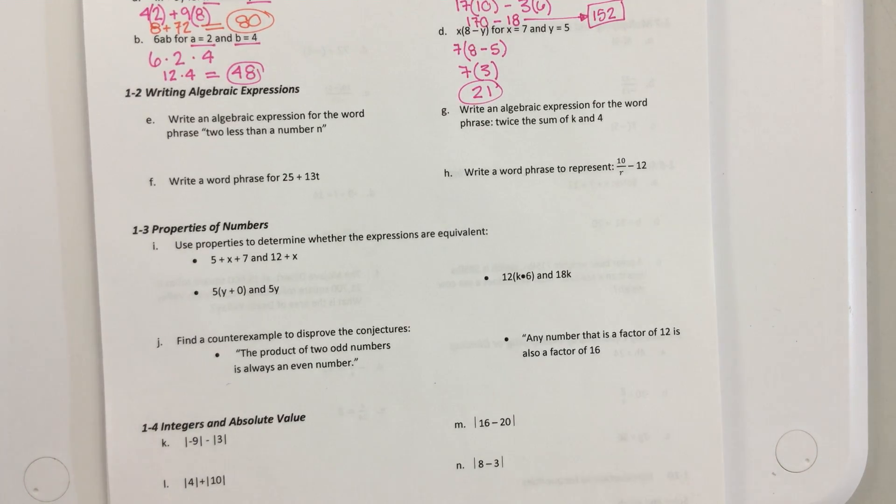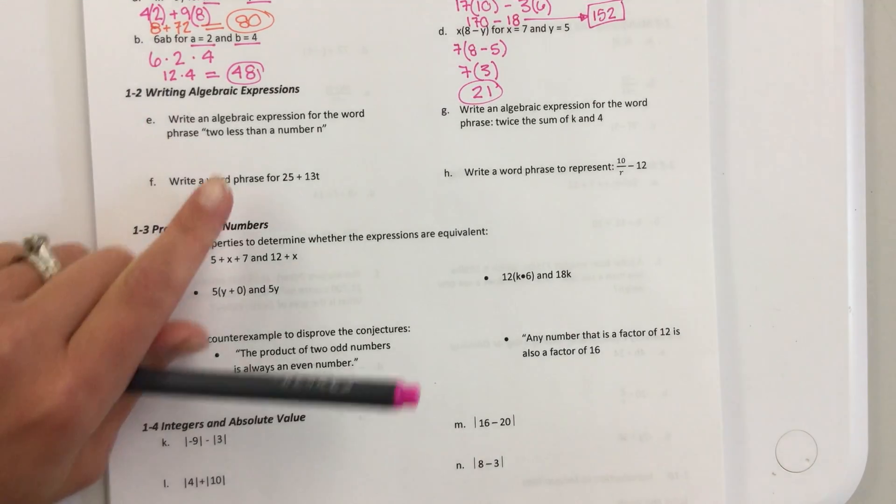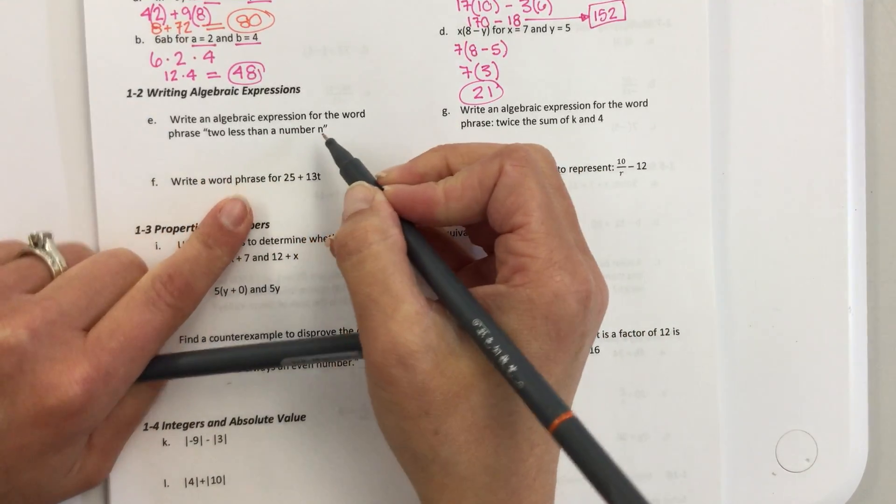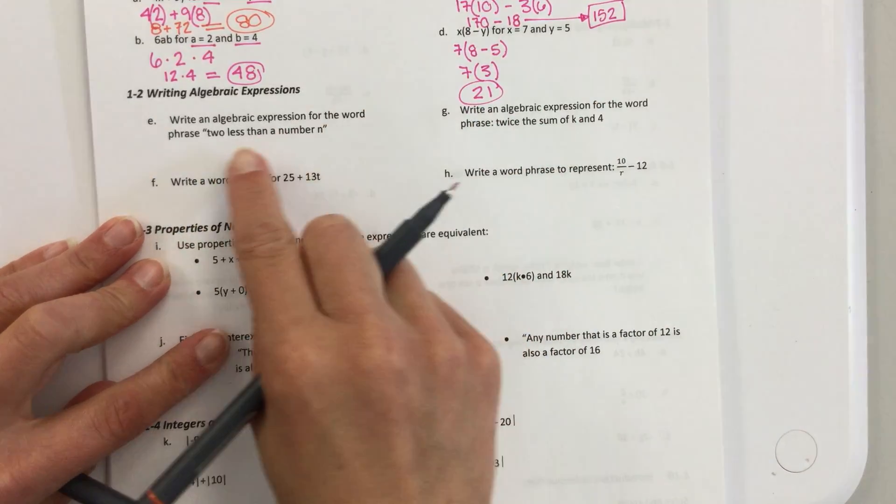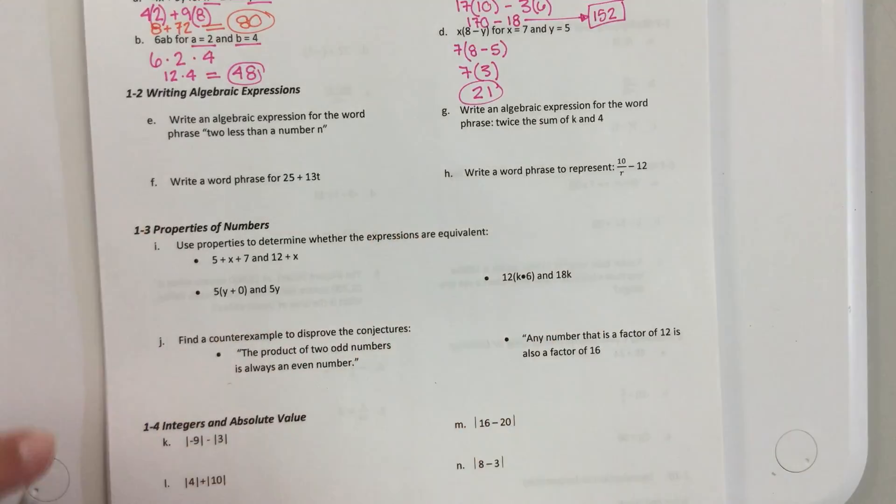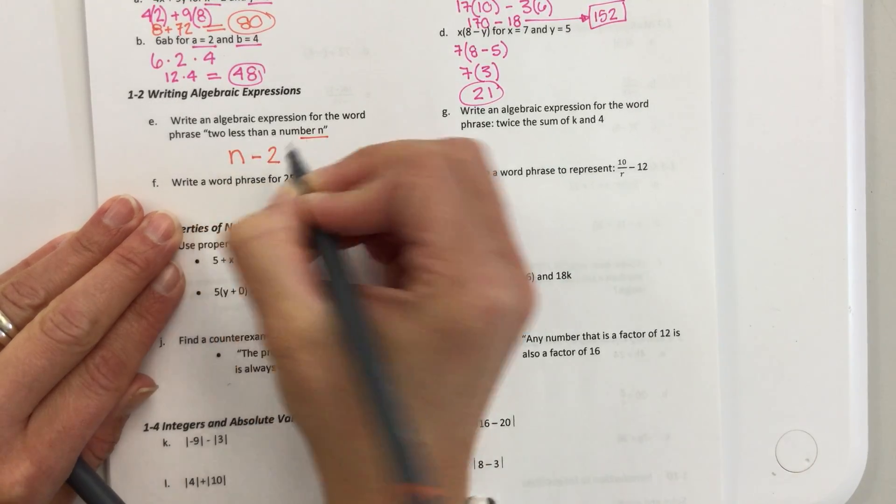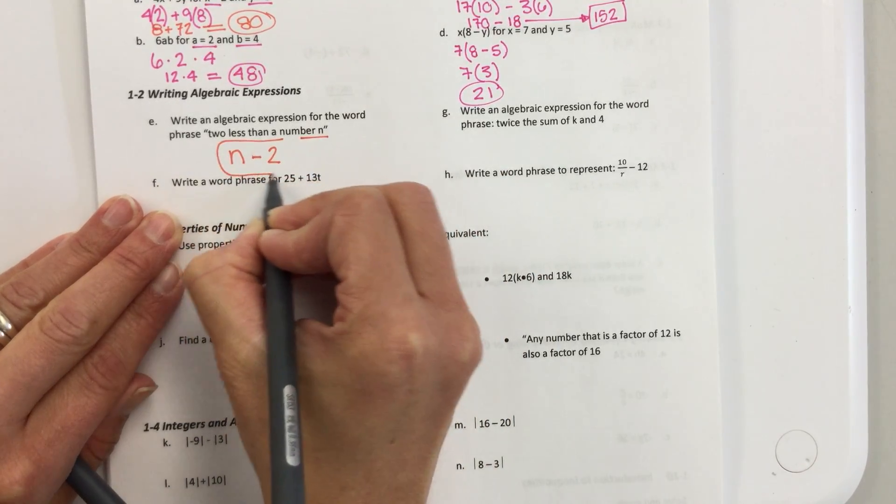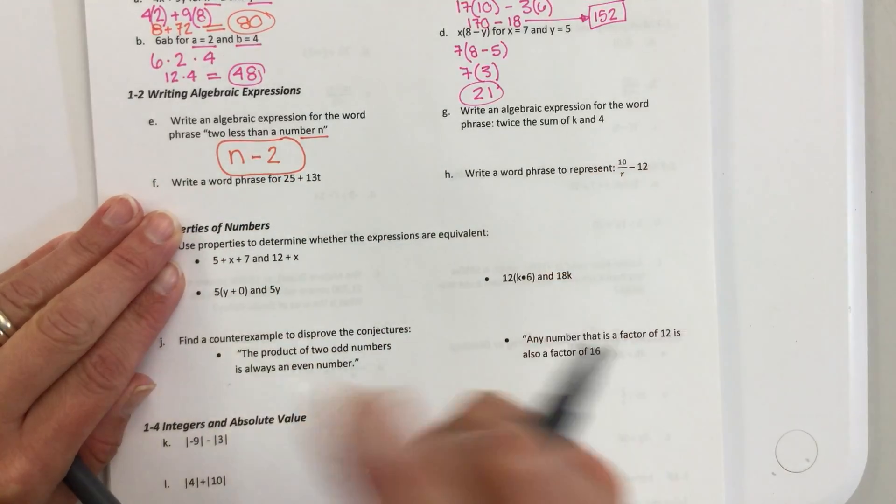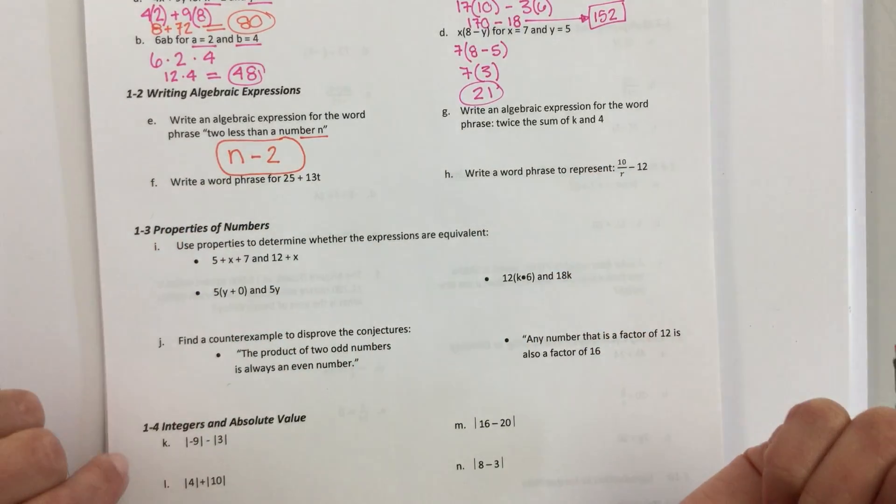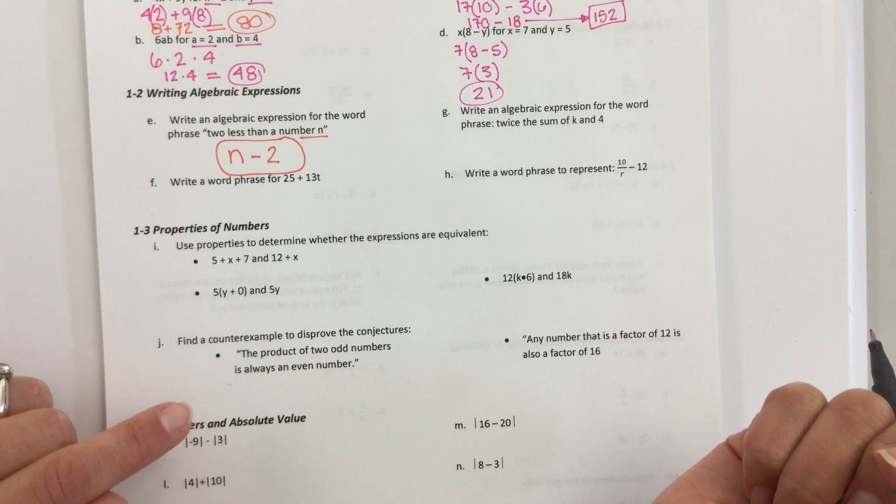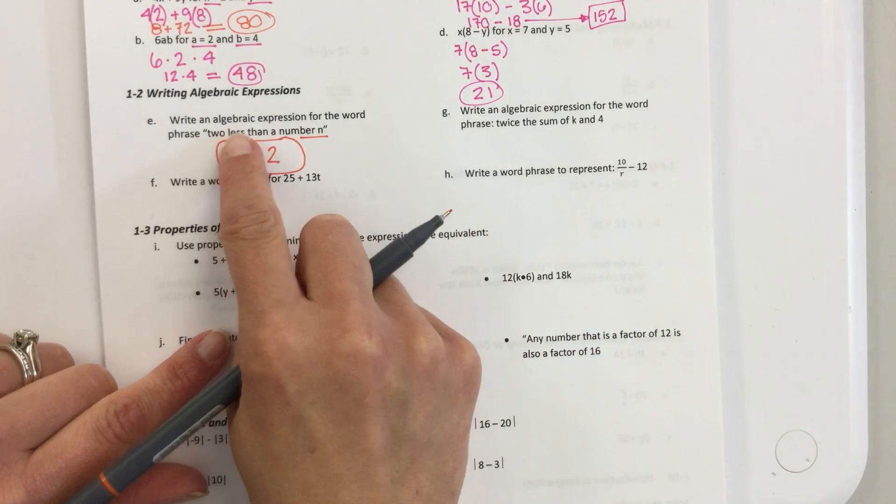So, it says write an algebraic expression for the word phrase 2 less than a number n. So, if I said I had 2 less apples than you, you would take how many you have, and you would subtract 2. So, in this case, you have to take the number n and minus 2. This is the one that I feel like most people will get wrong, because they'll do 2 minus n instead.